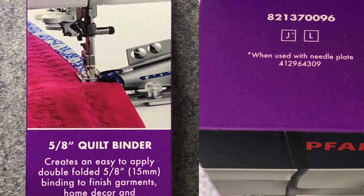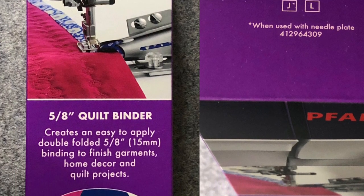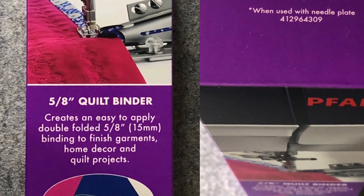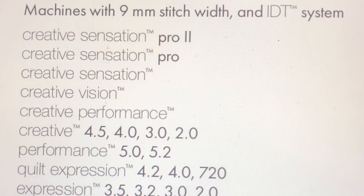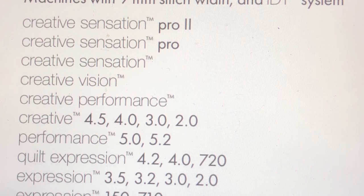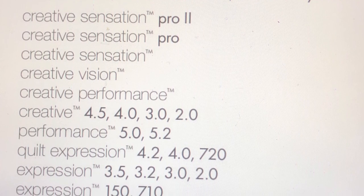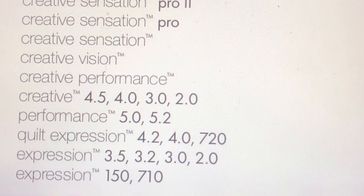It will work with the J class of sewing machines when used with needle plate 412964309. Here are the J class of sewing and embroidery machines that the new quilt binder will be compatible with, with the addition of that needle plate mentioned previously.